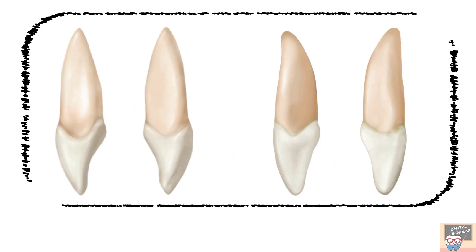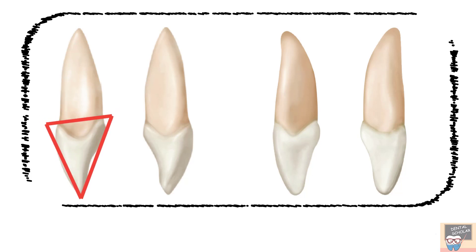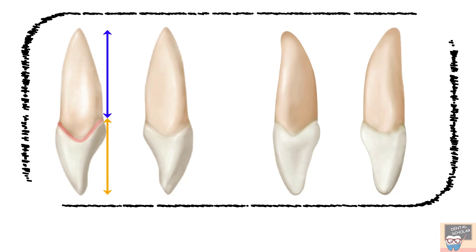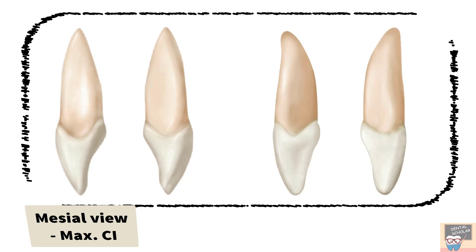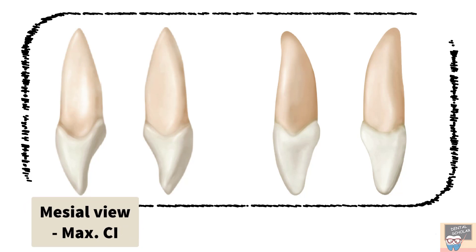Now let's go to the proximal aspect of these teeth. From the proximal view, that is the mesial and distal view, all incisor crowns appear roughly triangular or wedge-shaped. In the first tooth, notice that the crown appears very long as compared to the root. The cervical outline has a very prominent curvature. The root appears stocky and some amount of lingual surface is also visible. All these features indicate that it is a mesial view of the maxillary central incisor.